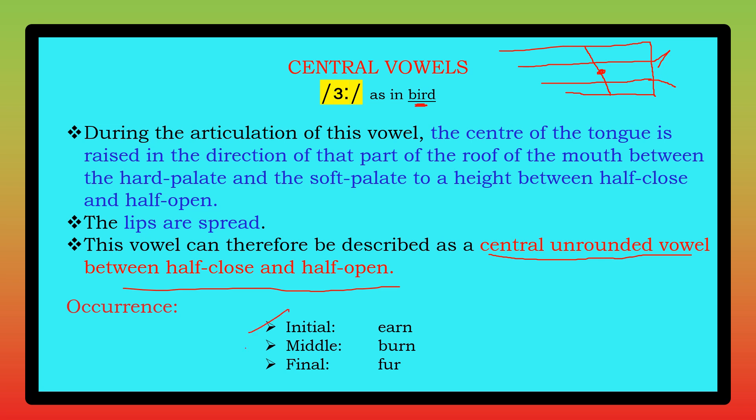This long /ɜː/ sound occurs in all three positions: initial, middle, and final. Examples: 'earn' (initial), 'burn' (middle), 'fur' (final). That is the classification of this long sound.